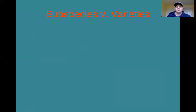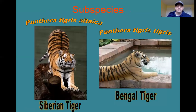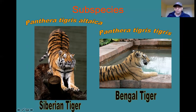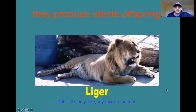Sometimes it becomes useful to classify organisms even further below the level of species into subspecies. In plants, rather than subspecies we would call those same groups varieties. For example, we have different subspecies of tigers: the Siberian tiger lives in Siberia and has a really full thick coat because it's awfully cold there, while the Bengal tiger in India does not live in a cold area and has a much thinner coat. These are both tigers — there are significant differences between them, but they are still the same species and we can classify them further into subspecies. Members of different species can sometimes interbreed, like a male lion and a female tiger, but they do not always produce fertile offspring — here we have a sterile offspring, the liger.